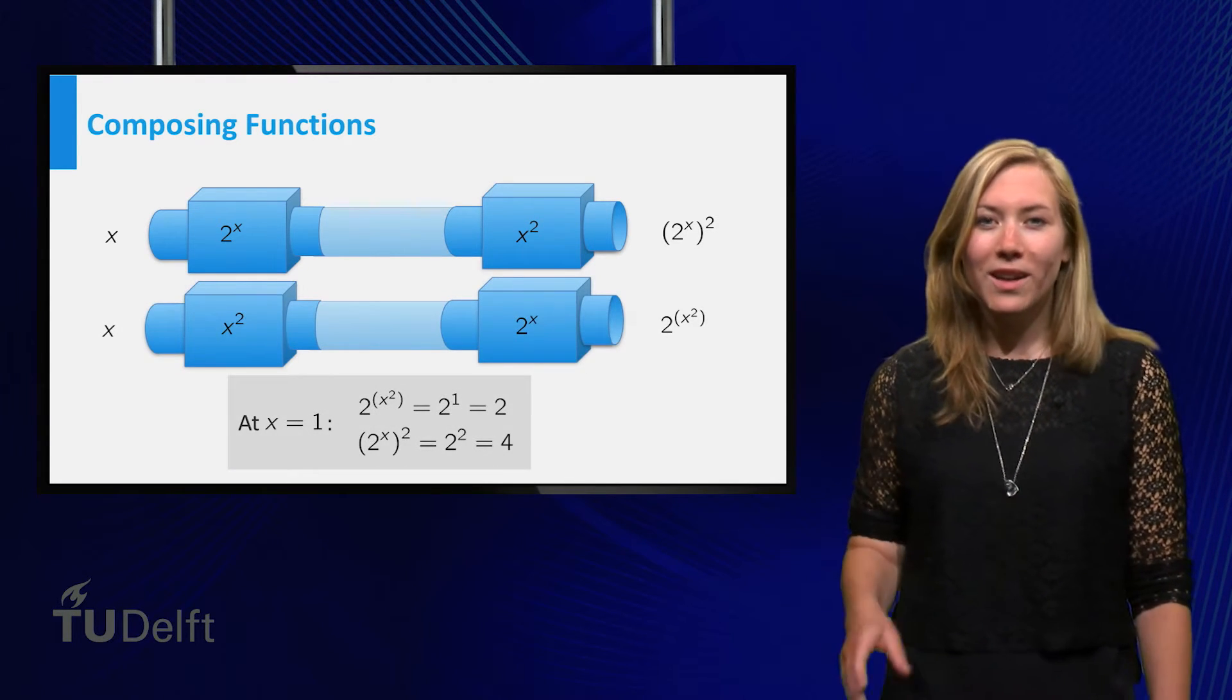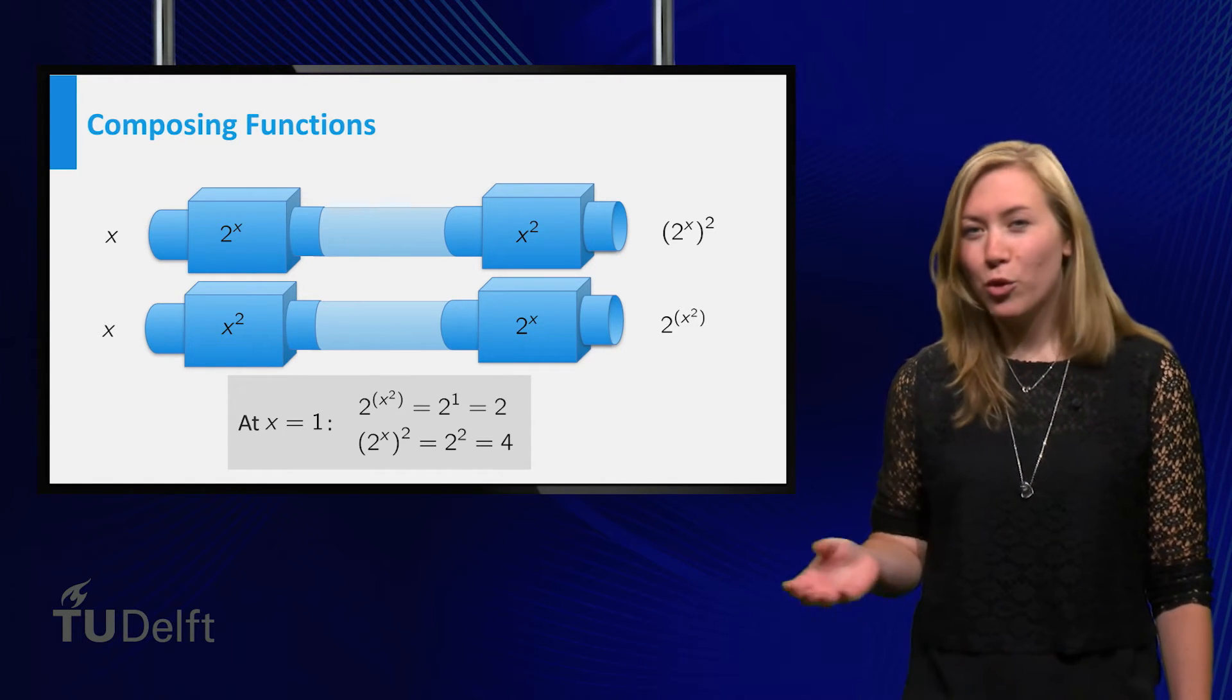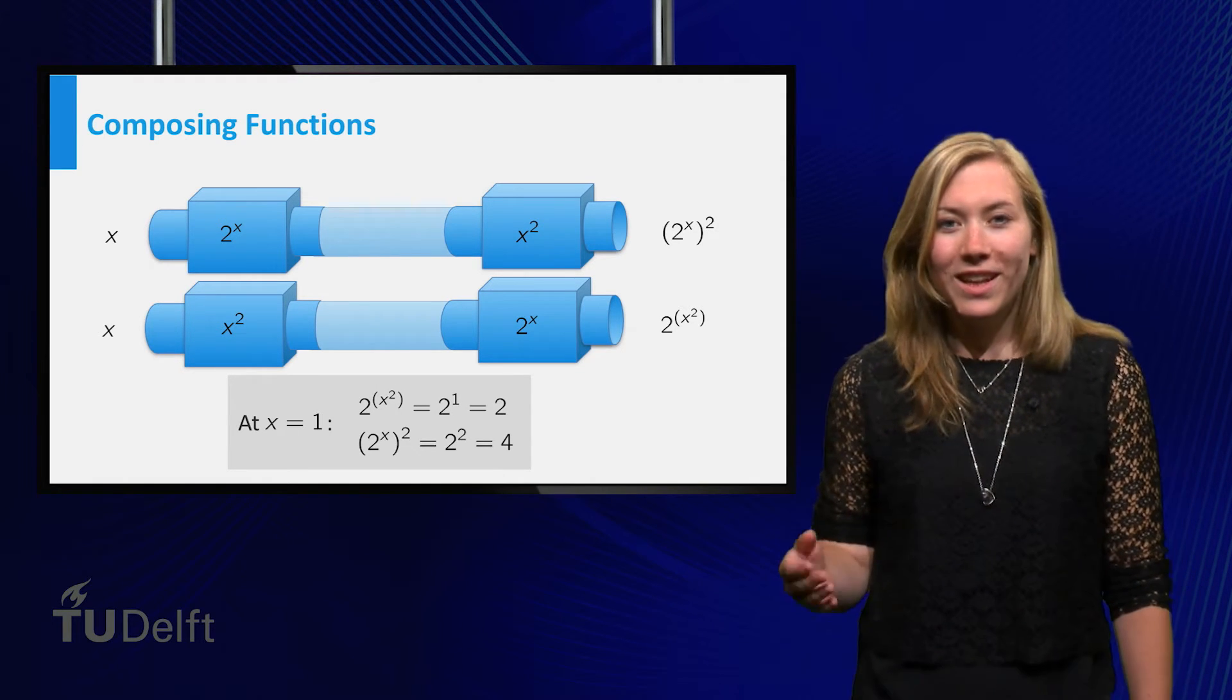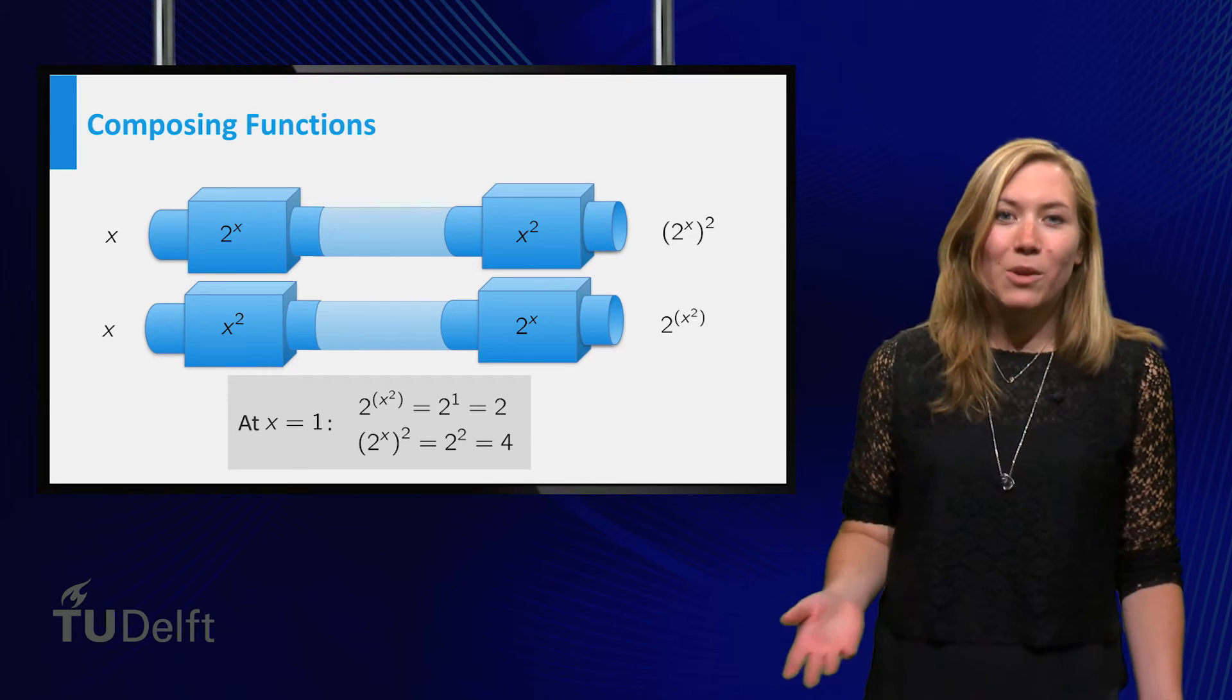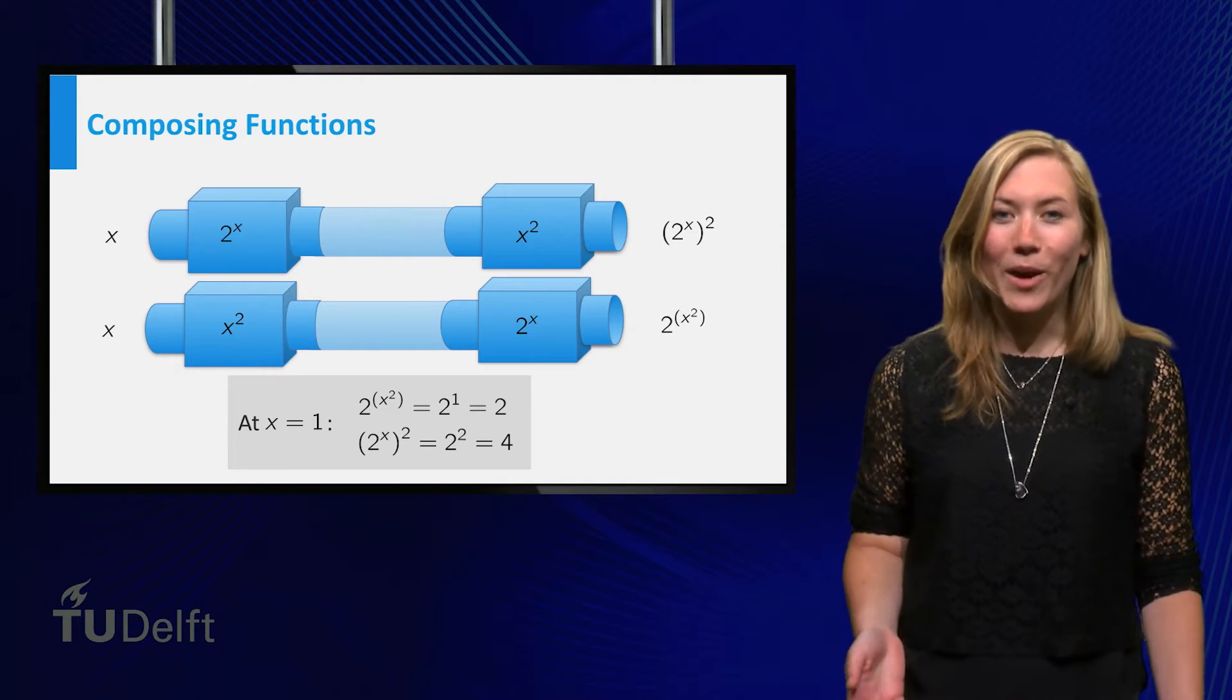2 to the power x squared is unequal to 2 to the power x squared. Recognizing that a function is a composition can be helpful, as then you might use a substitution to turn a complicated problem into a simpler one.